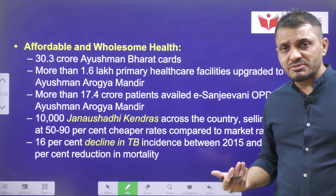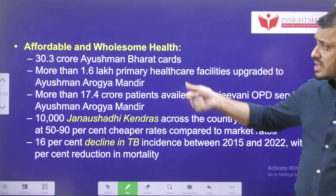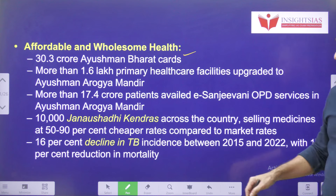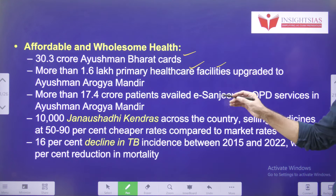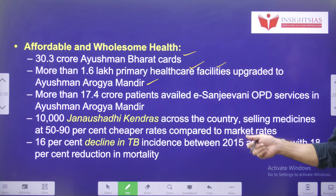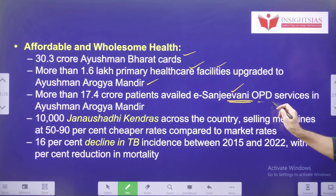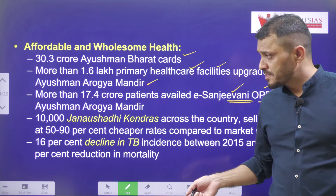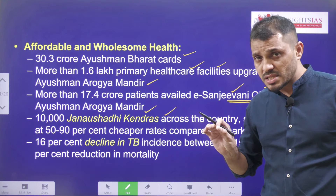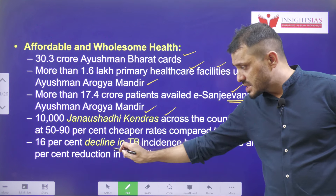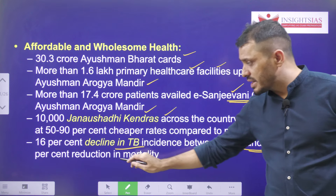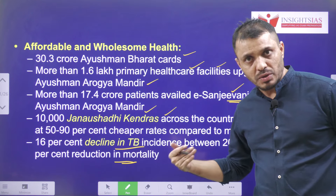Regarding affordable and wholesome health, the government provided Ayushman Bharat cards, and around 1.6 lakh primary health facilities were upgraded to Ayushman Arogya Mandir. Around 17.4 crore patients availed eSanjeevani OPD services, and around 10,000 Jan Aushadhi Kendras were established to provide affordable medicines. There has been a 16% decline in TB incidence between 2015 and 2020, with around 18% reduction in TB-related mortality.